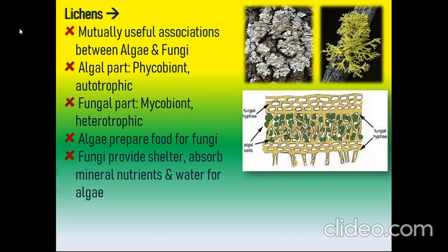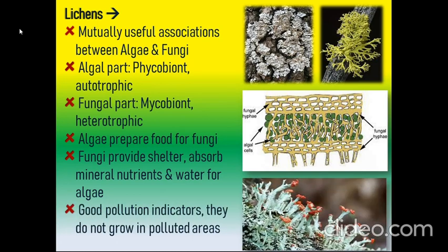Algae prepare food for fungi, and fungi provide shelter, absorb minerals, nutrients, and water for the algae to prepare food. This is a very mutual and cooperative association. Lichens are also a good pollution indicator — they do not grow in polluted areas.